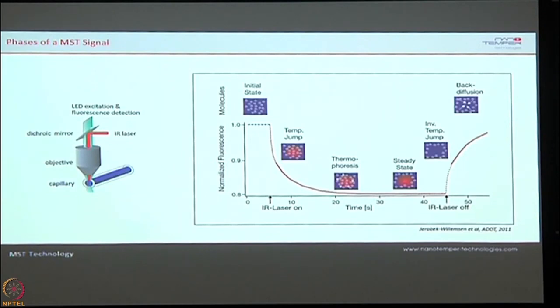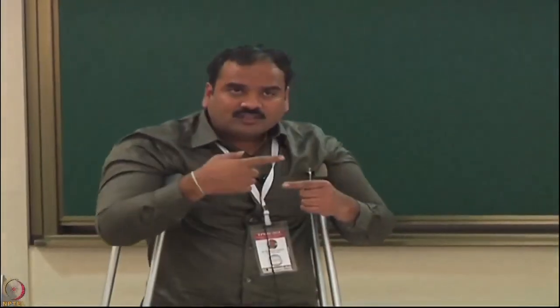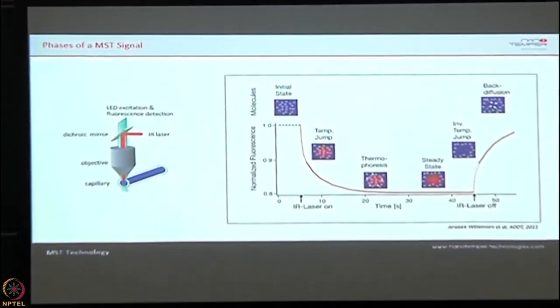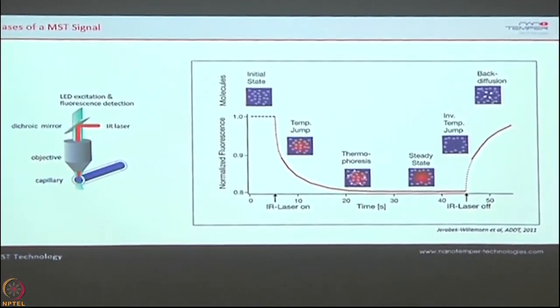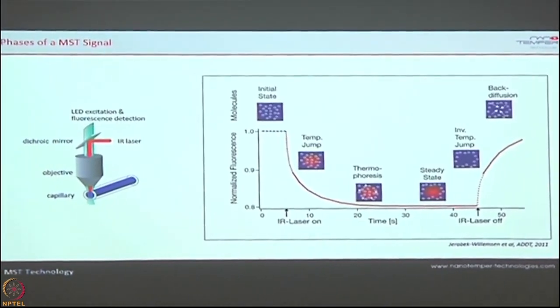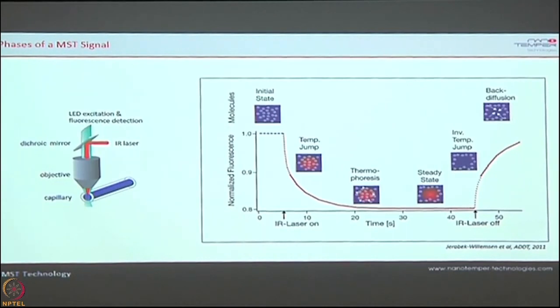Looking at the typical signal: you fix one partner and titrate the second. For the first 5 seconds all the molecules are uniformly distributed. The moment you put the IR laser on, all molecules move away from the heat, and within 30 seconds they attain the steady state. After that, putting the laser off, since there is a fluorophore, the fluorescence regains and the signal shoots up.